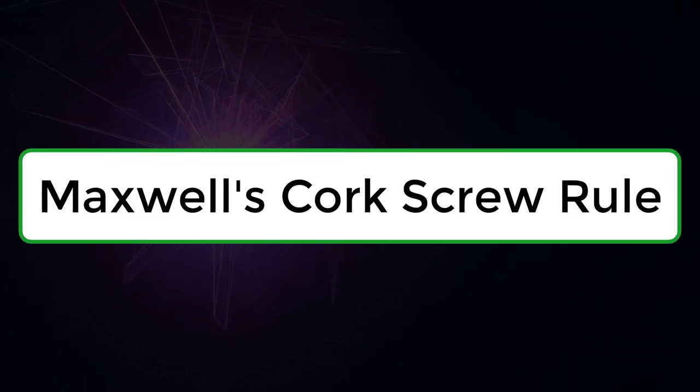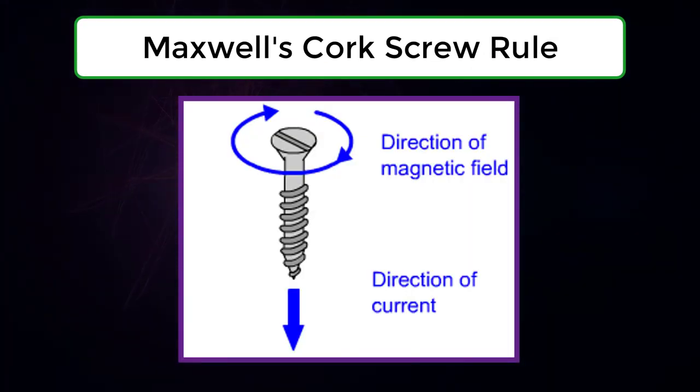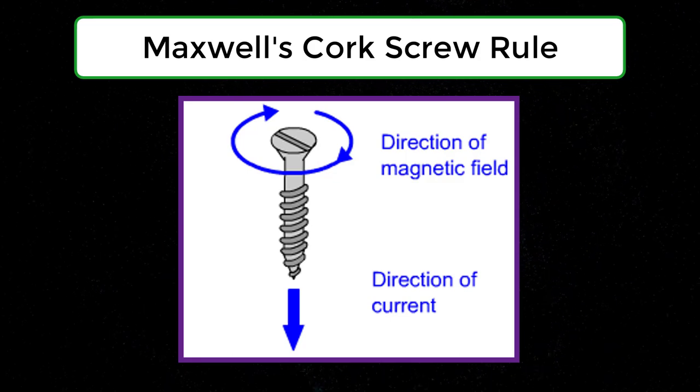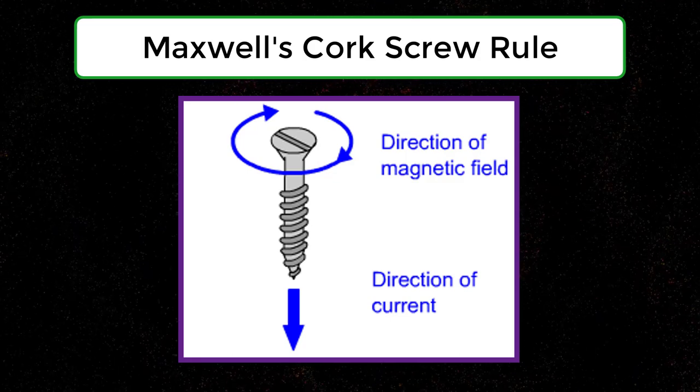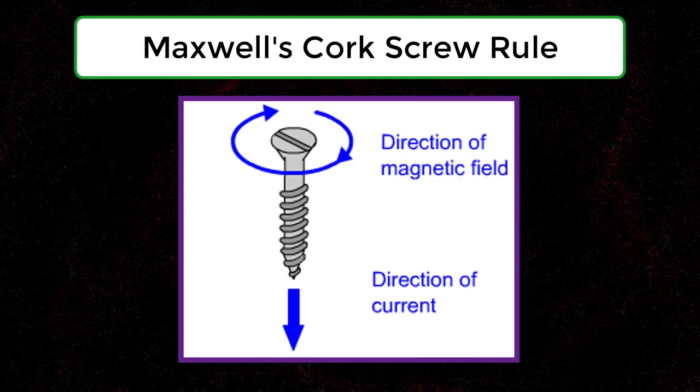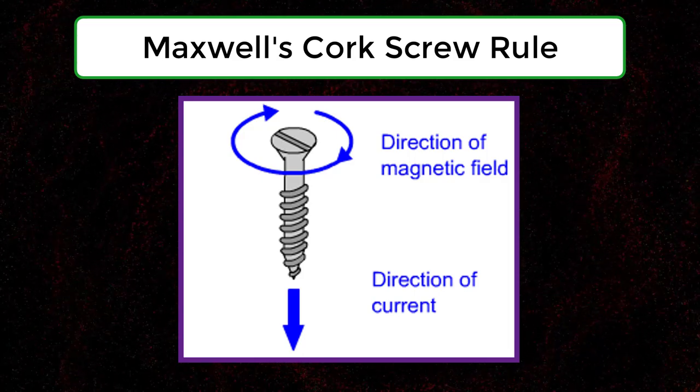Maxwell's Cork Screw Rule: Imagine a right-handed cork screw advancing in the direction of current. Then the direction of rotation of the head gives the direction of line of force.